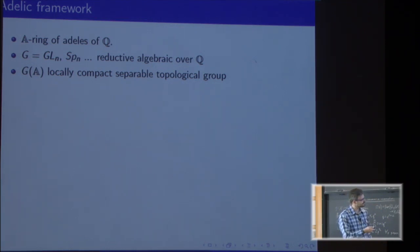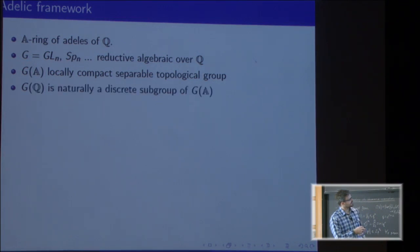In particular, there's a Haar measure. G(Q) is naturally a subgroup that sits there as a discrete subgroup.